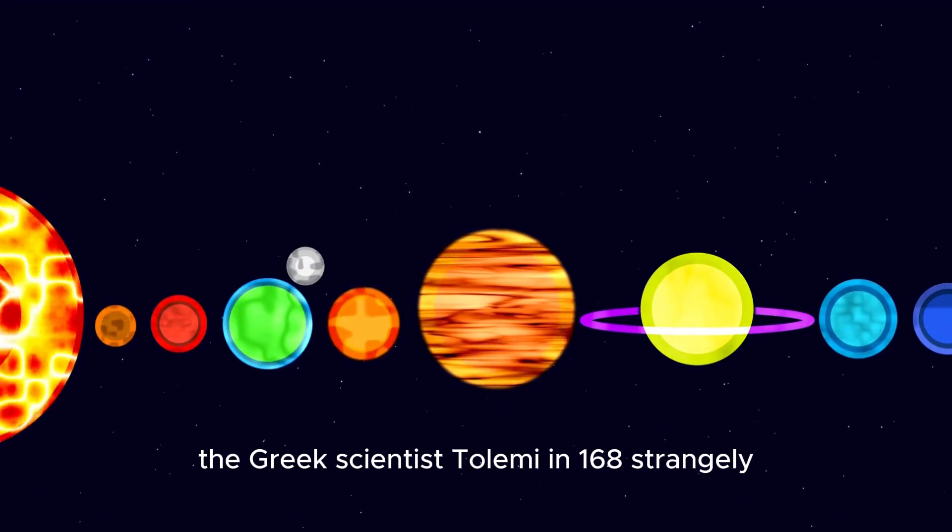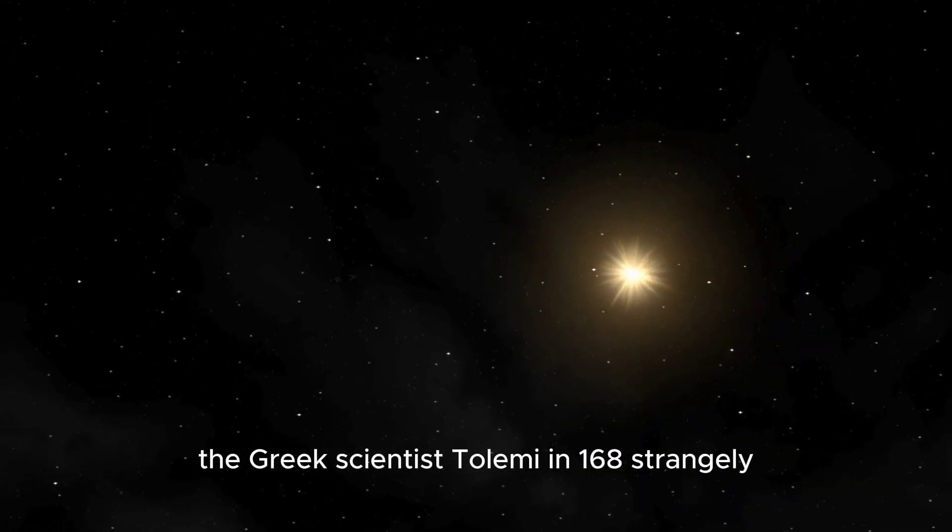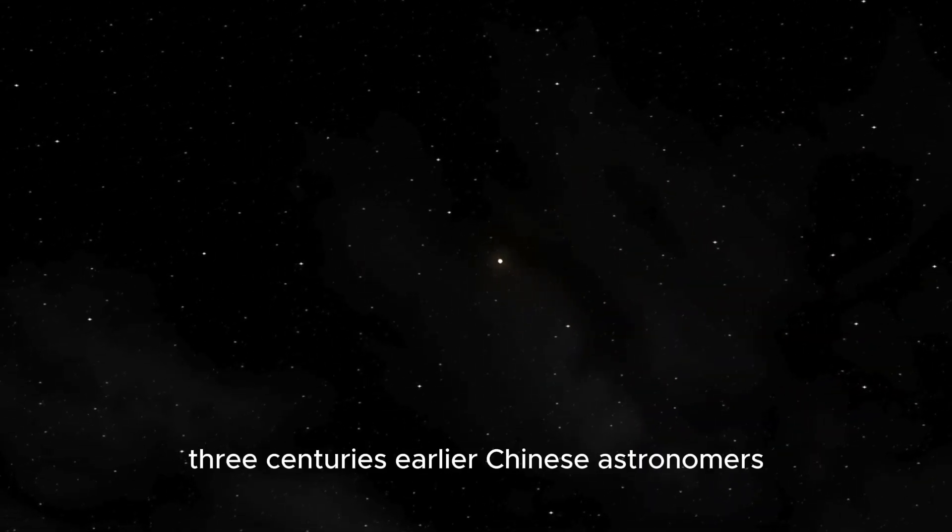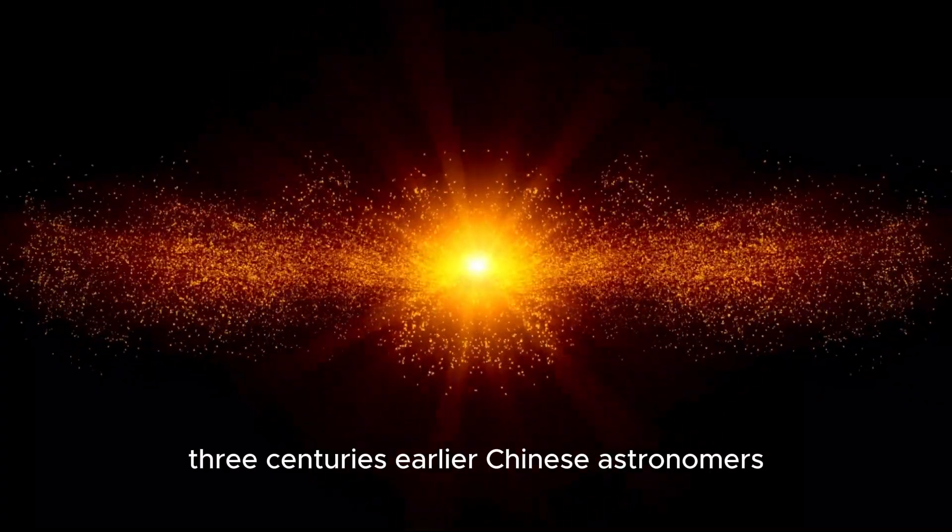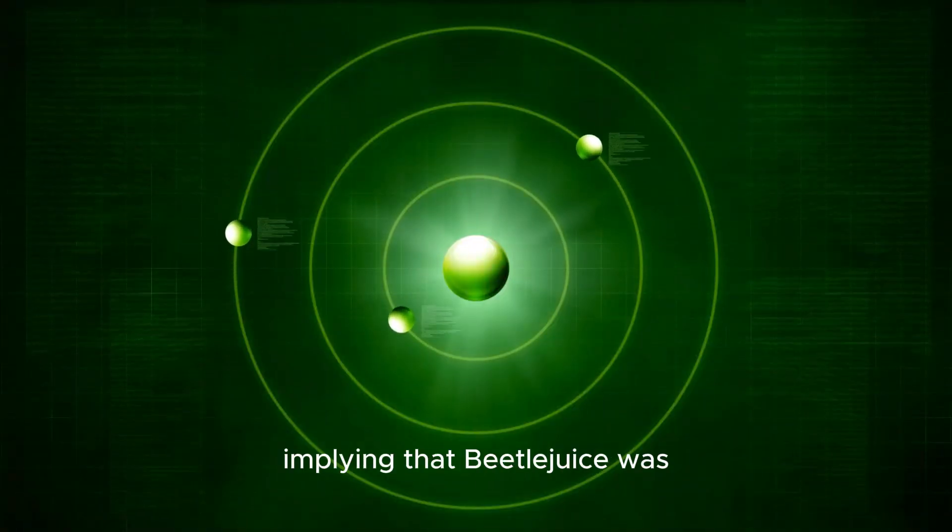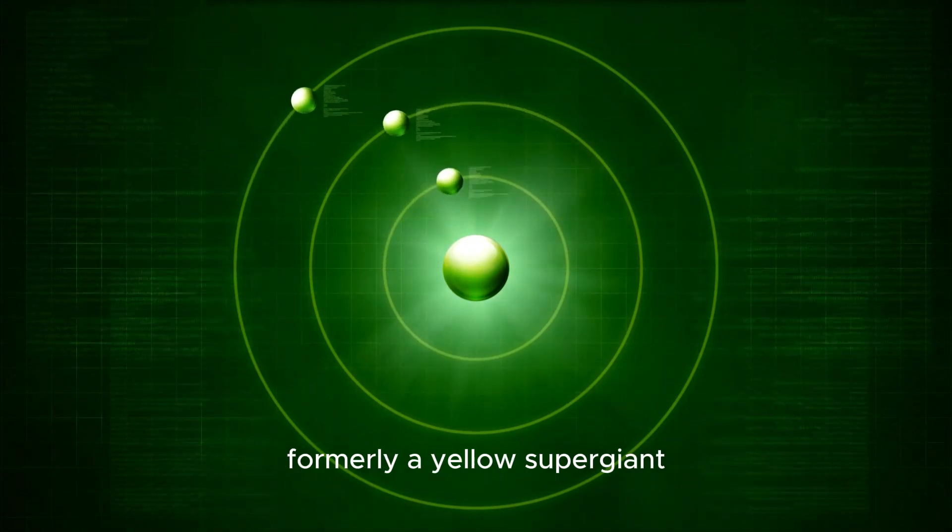The Greek scientist Ptolemy in 168 AD strangely referred to Betelgeuse's color as having a ruddy hue. Three centuries earlier, Chinese astronomers had characterized the star as having a yellow appearance, possibly implying that Betelgeuse was formerly a yellow supergiant.